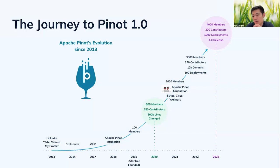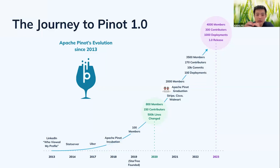The project focused on solving the problem of internal and external data analytics for hundreds of thousands of QPS, with billions of events being ingested into the data system every day. We solved this core problem, started getting more internal use cases, and then tried to open source it. We actually open sourced Pinot in 2015.